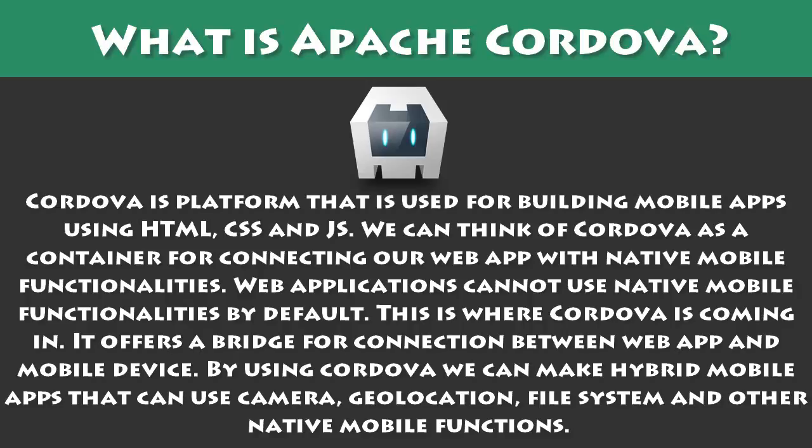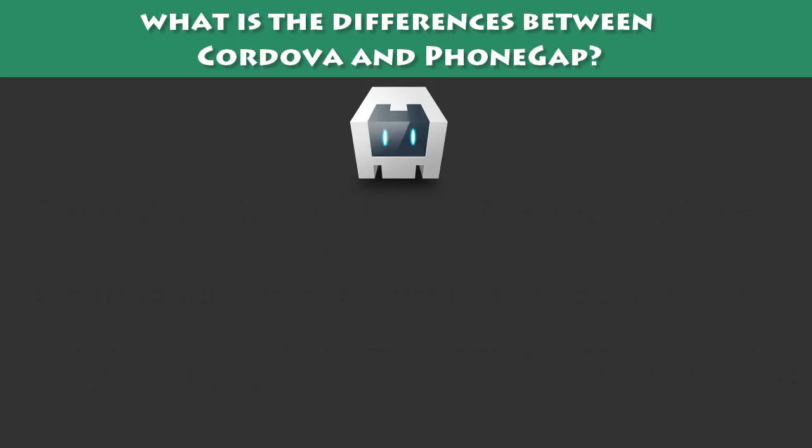By using Cordova we can make hybrid mobile apps that can use camera, geolocation, file system and other native mobile functions.